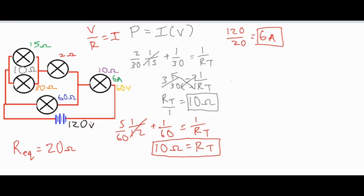Going back to the big chunk of lamps, we know 6 amps flows through it and there's a 60V drop across it. The bottom 60Ω branch acts alone, so it gets the full 60V. Using V/R: 60 ÷ 60 = 1 amp through the bottom branch.